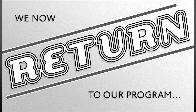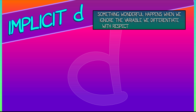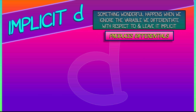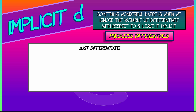Moving back to our main story, something wonderful happens when you differentiate not with respect to x or y or z or any variable at all — you just differentiate. What happens when you do that? You get differentials. This is not mysterious; you're going to see how this works right away. Let's consider a function x squared plus 3x minus 5, and let's hit it with this differentiation operator d.